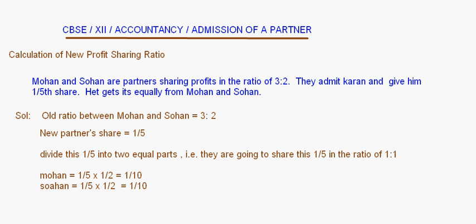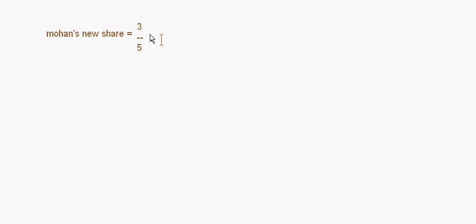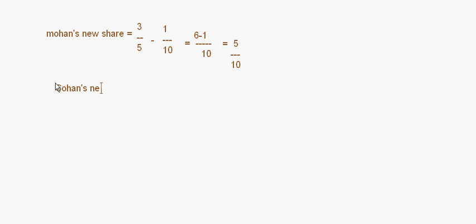Mohan's new share equals his old share minus his sacrifice: 3/5 − 1/10. Making the denominator 10, this becomes 6/10 − 1/10 = 5/10. So Mohan's new share is 5/10. Similarly, Sohan's new share equals his old share minus his sacrifice: 2/5 − 1/10.